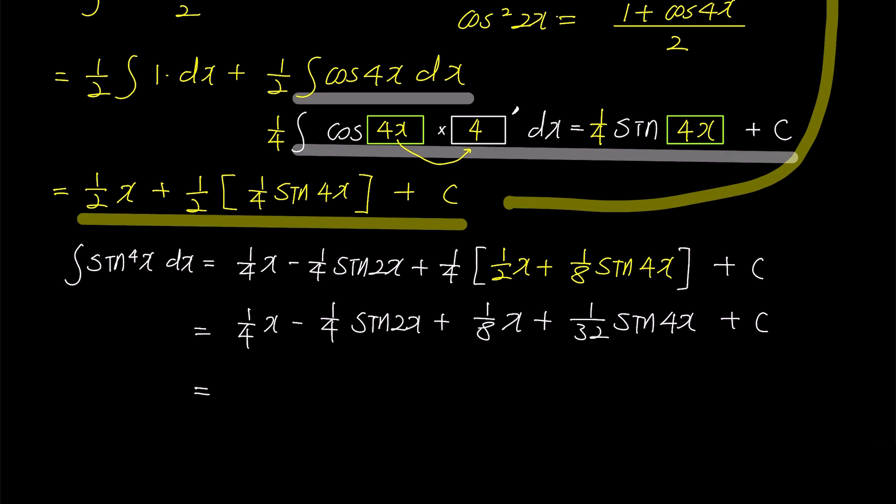Combining the first and the third terms with an x, we obtain 3 over 8x minus 1 over 4 sine 2x plus 1 over 32 sine 4x plus c as a result of the integral of sine to the power of 4x.